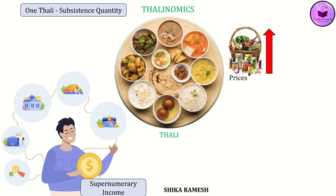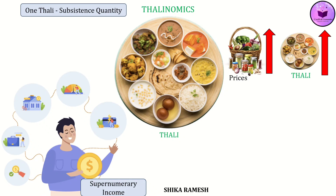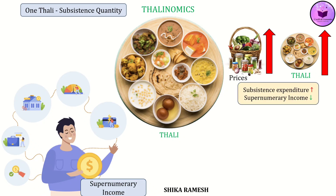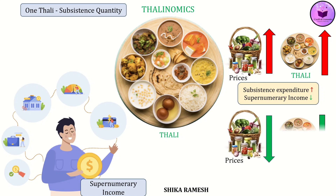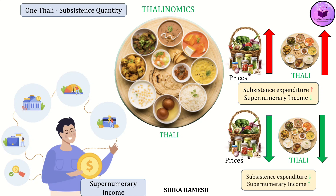What happens if the prices of vegetables, pulses, or spices rise or fall? If prices rise, the cost of the basic thali rises, meaning the household will still buy the minimum quantity of food required, but a bigger share of their income will now be devoted to purchasing the subsistence. As a result, there is less supernumerary income left for food variety, better quality ingredients, or other categories like clothing, services, or even savings. On the other hand, if prices fall, the cost of the thali reduces. The subsistence need is still the same, but now requires less money to meet it, leaving the household with more supernumerary income, which can be used to add variety to meals, improve nutrition, or spend on non-food items.